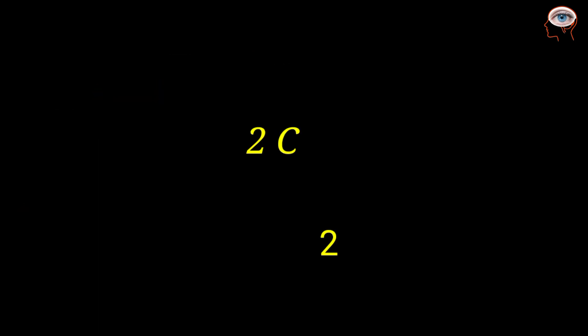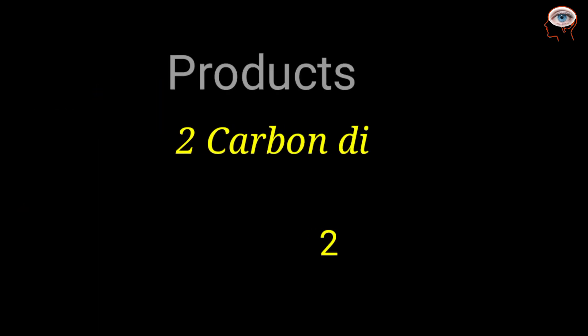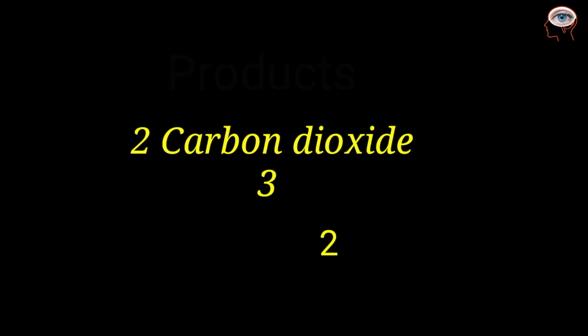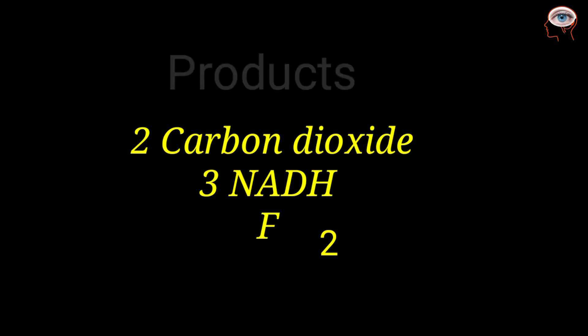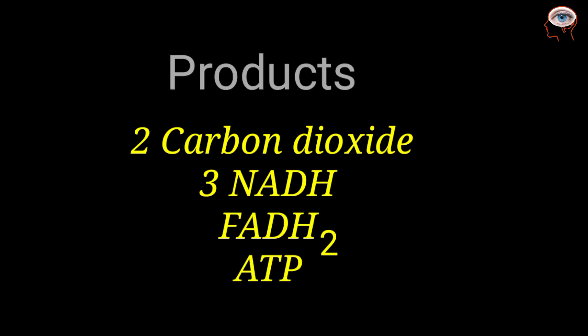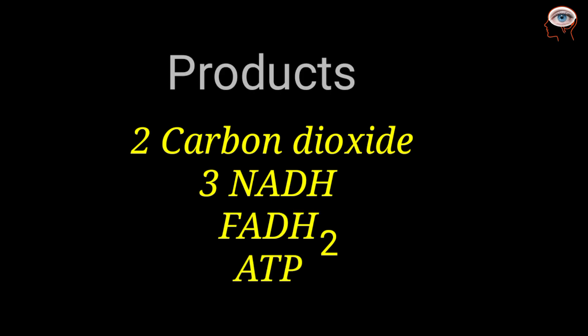So the net gain of the Krebs cycle is 2 carbon dioxide molecules, 3 NADH molecules, 1 FADH₂, and 1 ATP.